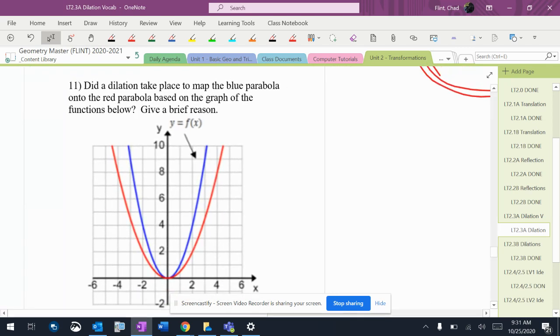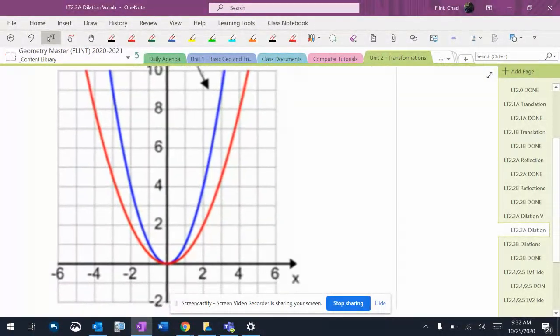Now we're getting to another one. You probably recognize this from the reflection room that said there was a reflection. So it says there's been a dilation take place to map the blue parabola onto the red parabola based on the graph of the functions below. Now, this is a little challenging.